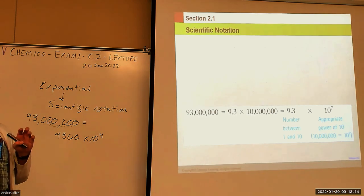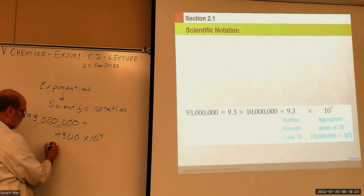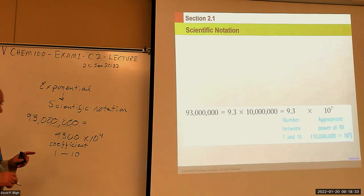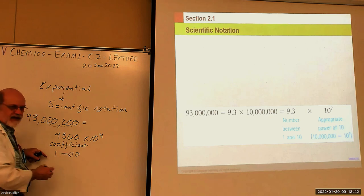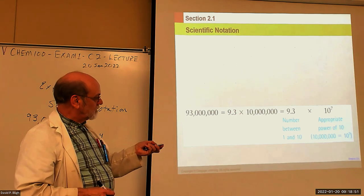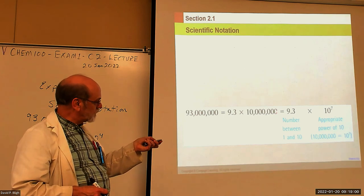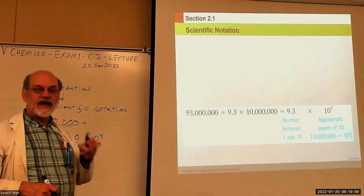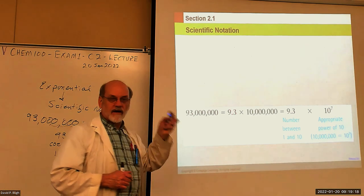Scientific notation has one rule exponential notation does not: the coefficient — which I identify with the x-bar — must be between one and less than 10. If the coefficient becomes 10, you reduce it by moving the decimal one more place and increasing the power by one. So 10 times 10 to the seventh becomes 1 times 10 to the eighth. Whenever you go from standard notation to scientific notation, if you move the decimal to the left, you're storing up positive powers of 10.